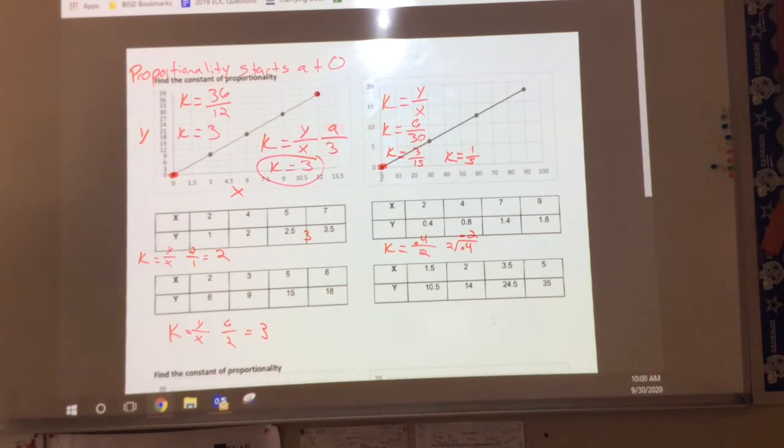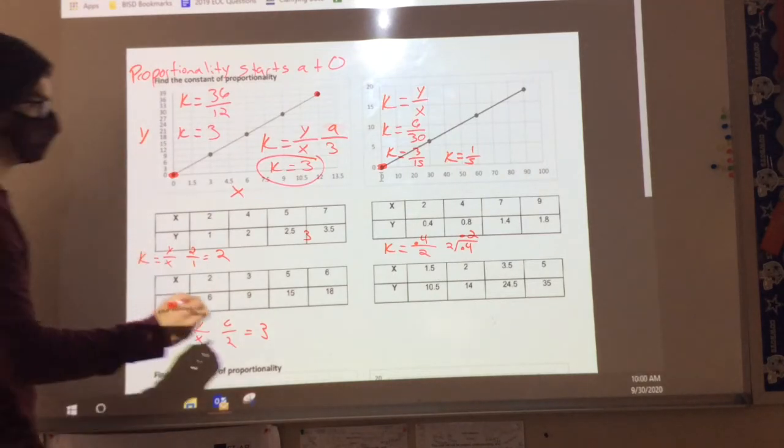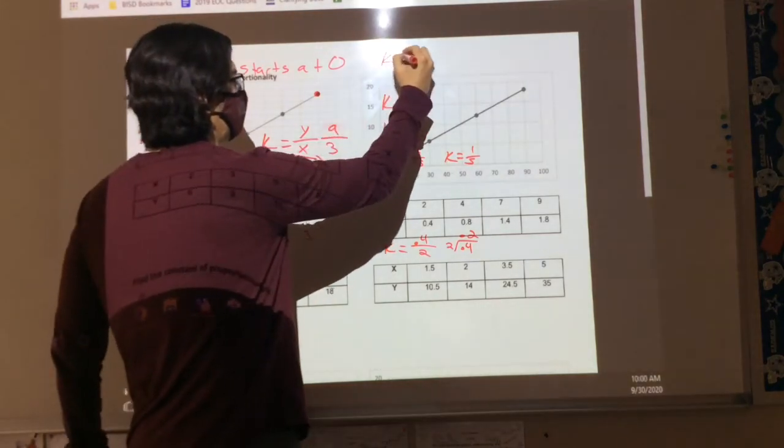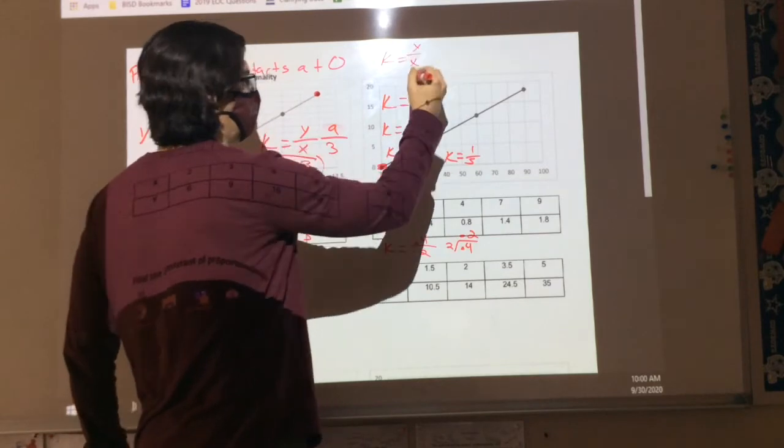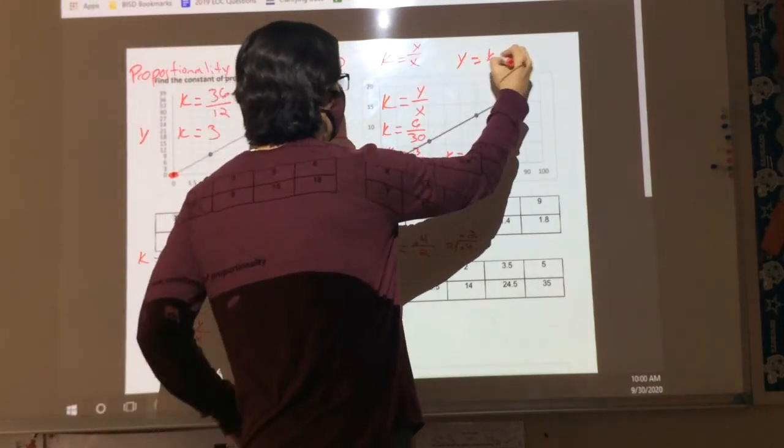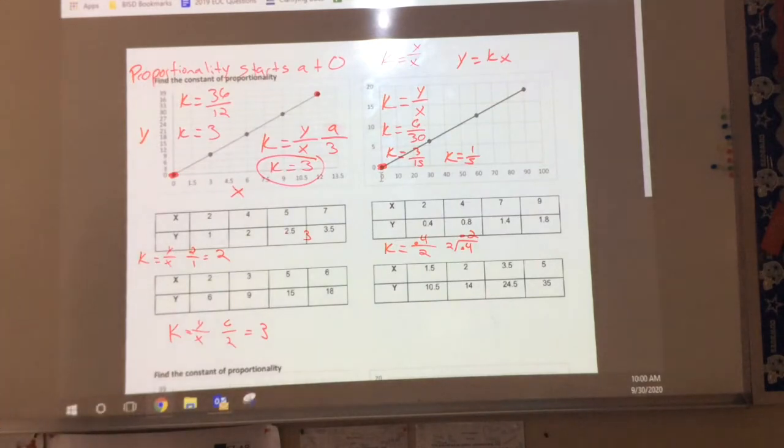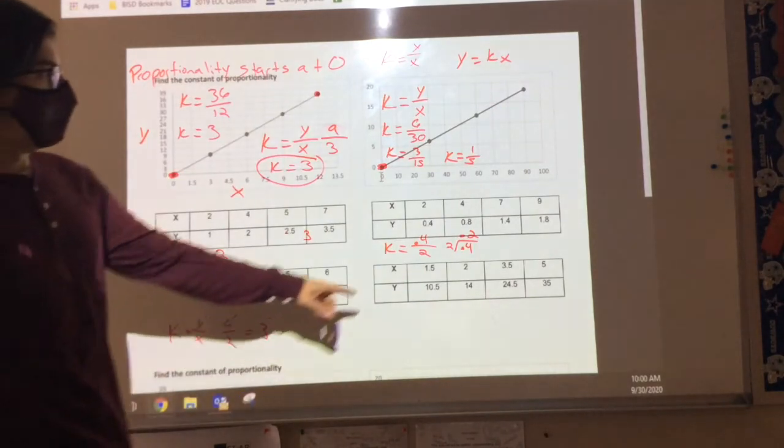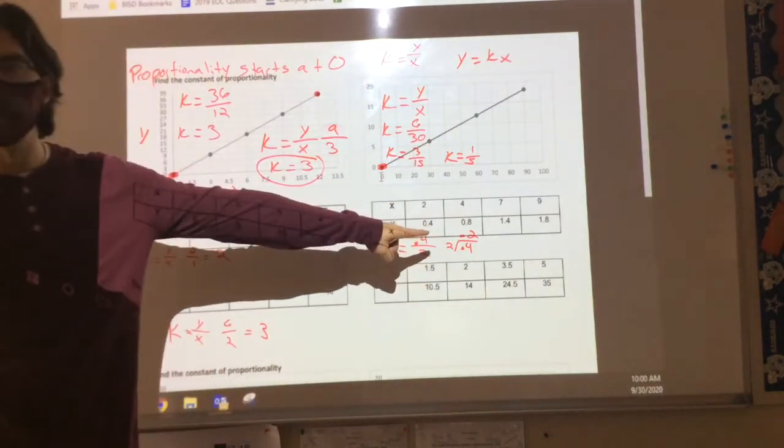So let me rephrase this. The formula is K equals Y divided by X, right? But at the beginning, I had Y equals K times X. So what that's really implying, Josh, is if we find our constant... So we said the constant's 0.2, right?